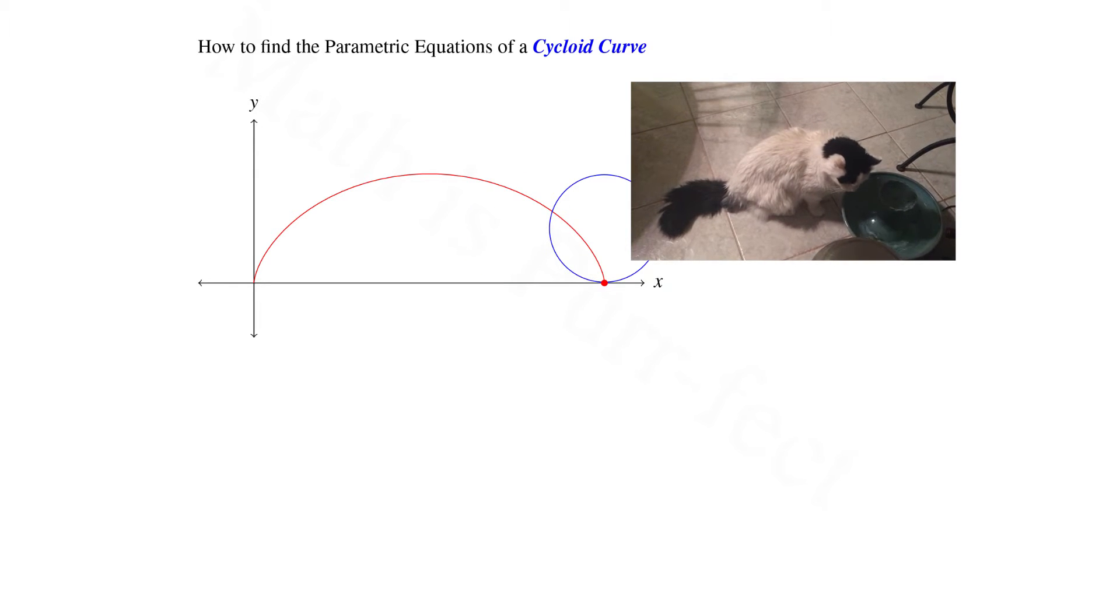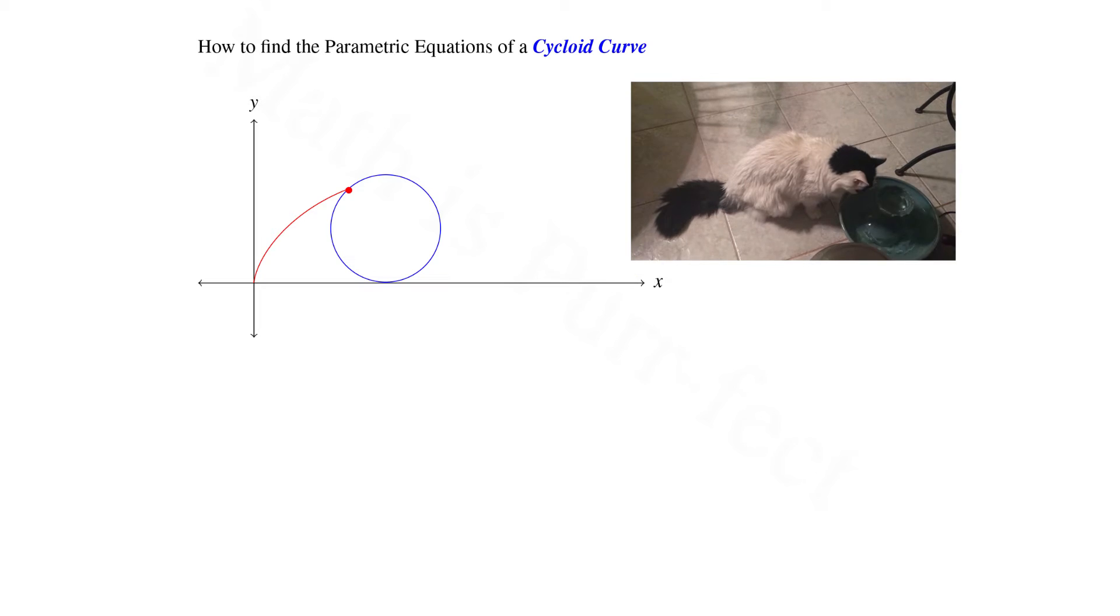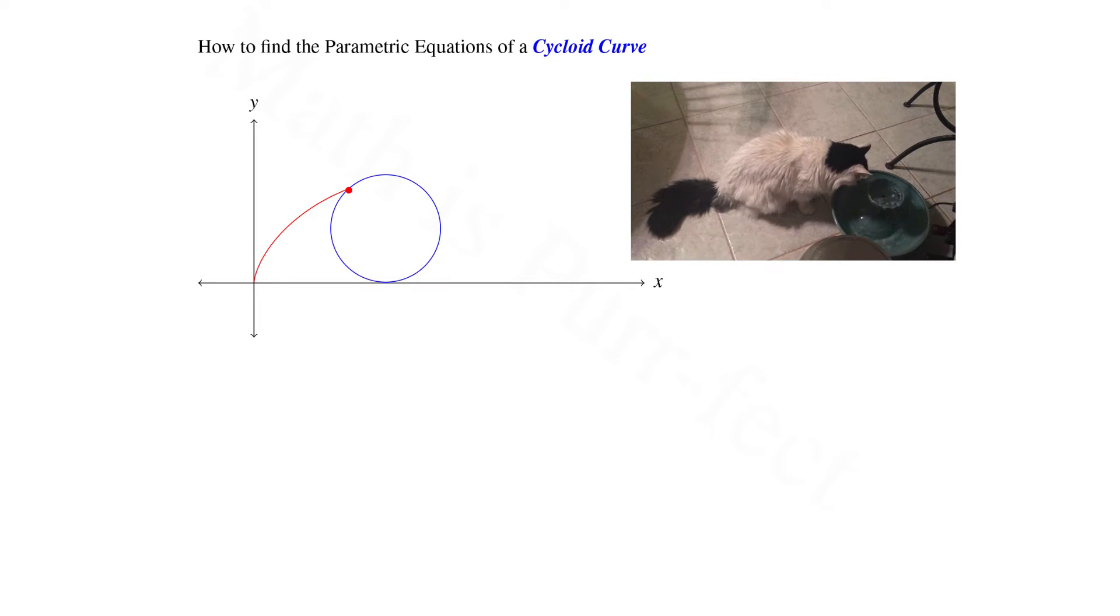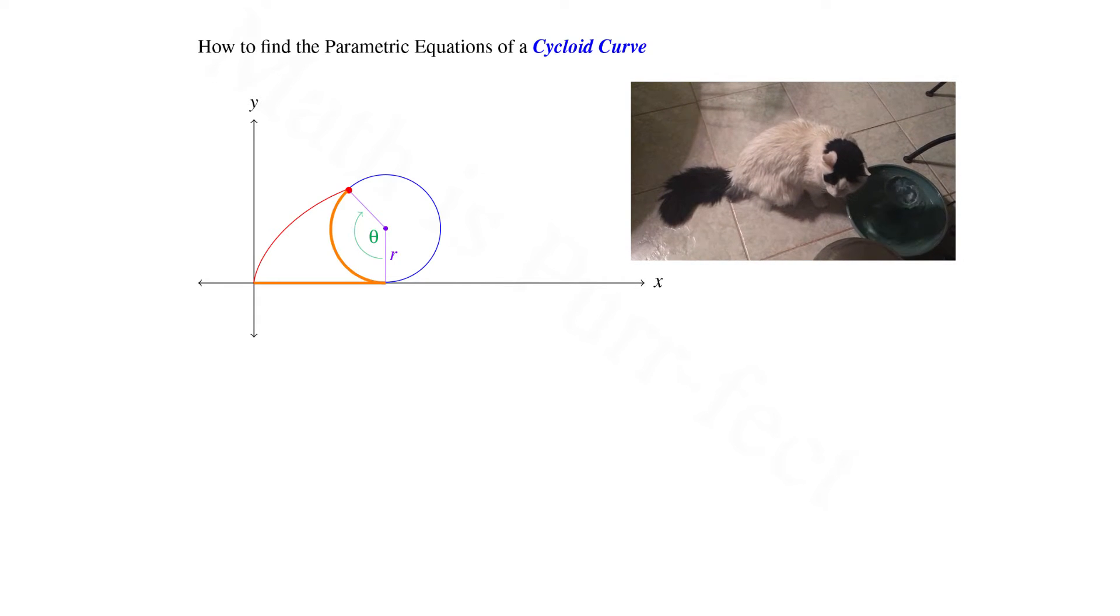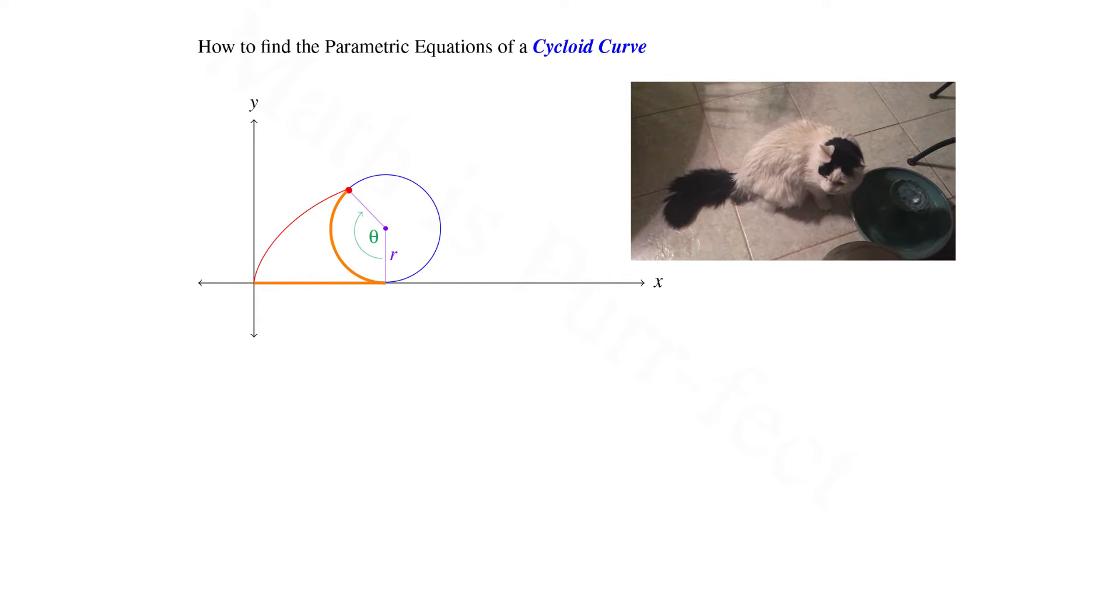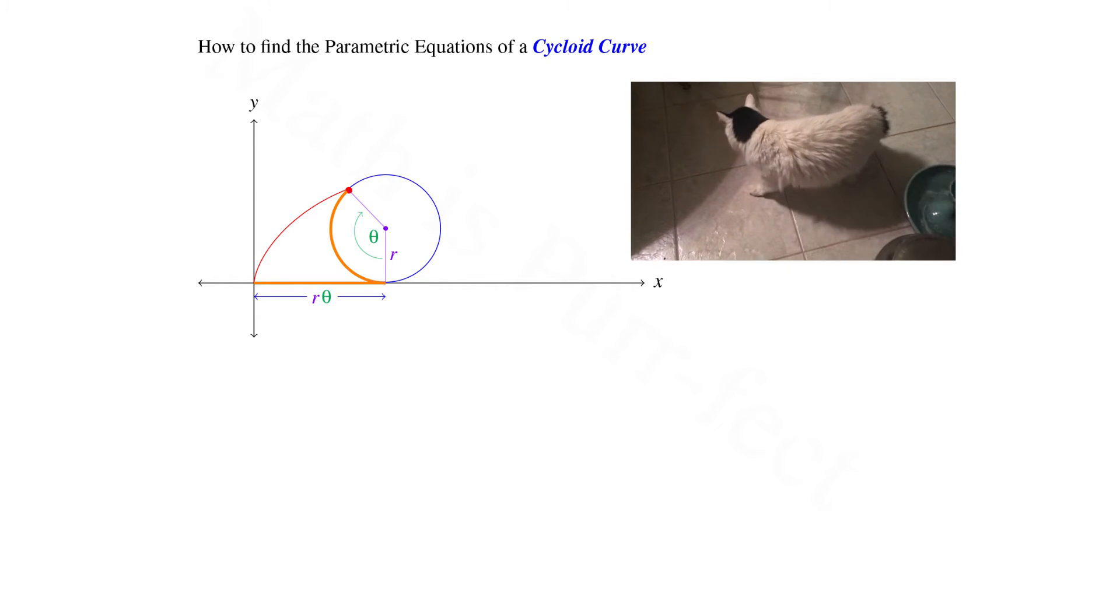In order to find parametric equations, let's consider a point on the curve after our circle has rotated through an angle theta. We note that the length of arc along the circumference is equivalent to the distance the circle itself has traversed along the x-axis, that is, r theta.